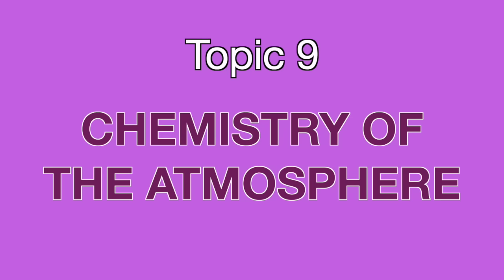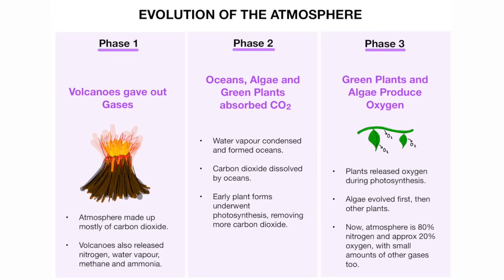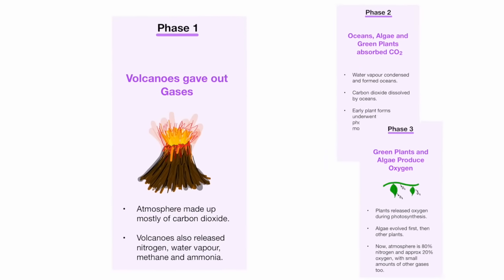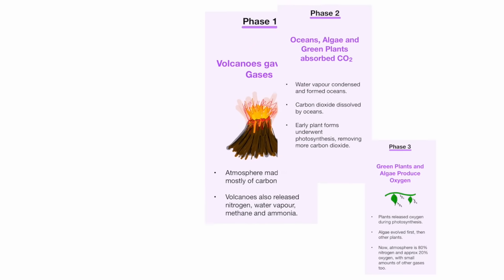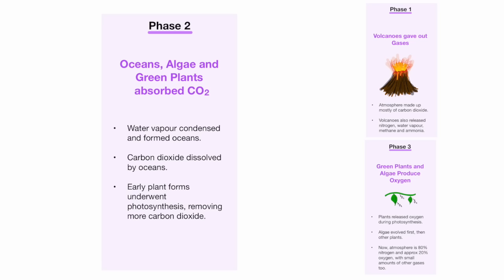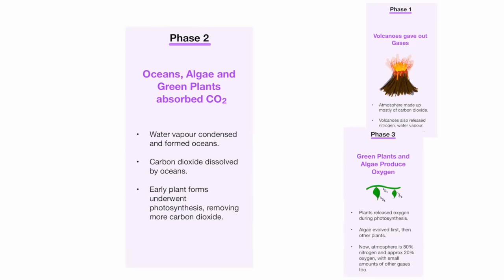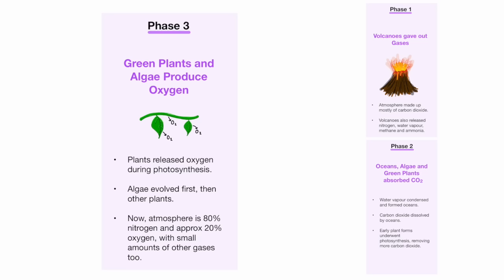We're on the second to last topic now — topic 9, chemistry of the atmosphere. First we have the evolution of the atmosphere, which comes in three stages. Phase 1 is where volcanoes gave out gases, so the atmosphere was mostly made up of carbon dioxide. Phase 2 is the formation of oceans, algae, and green plants, which absorbed a lot of the CO2 through photosynthesis.